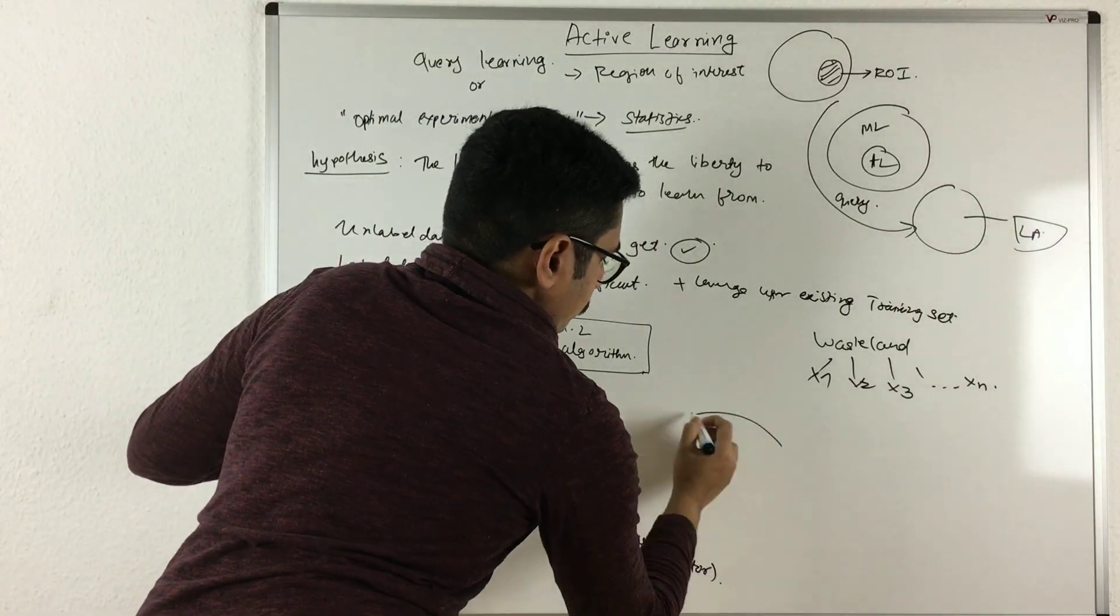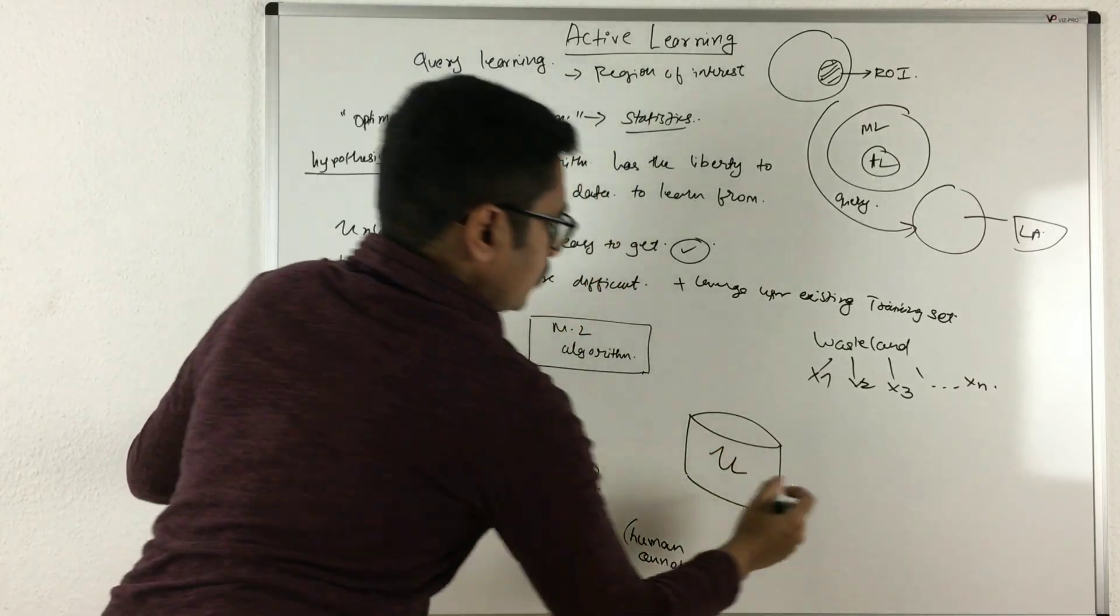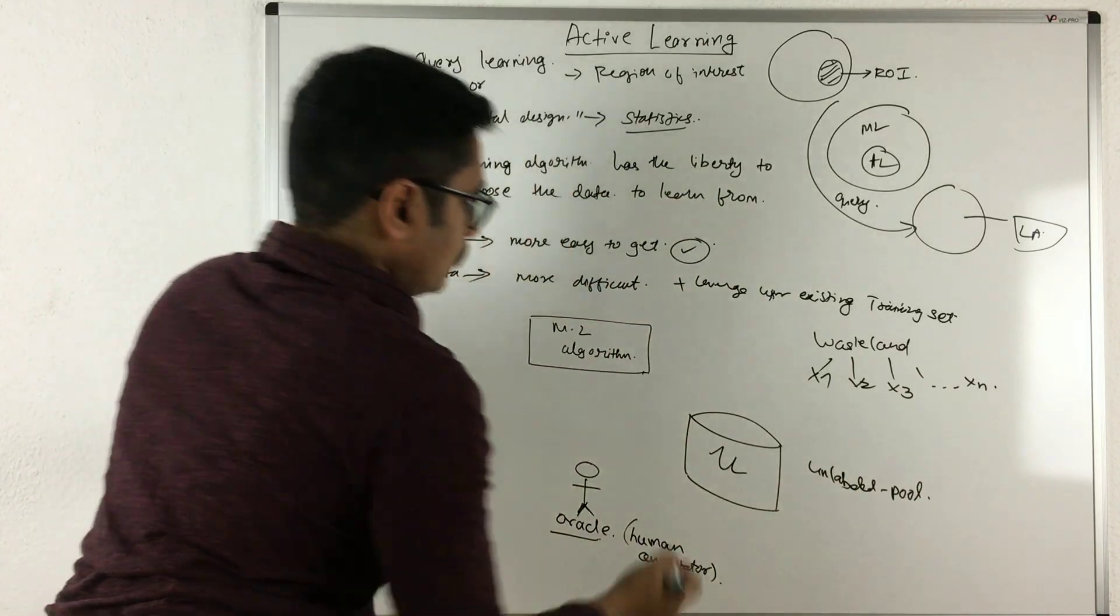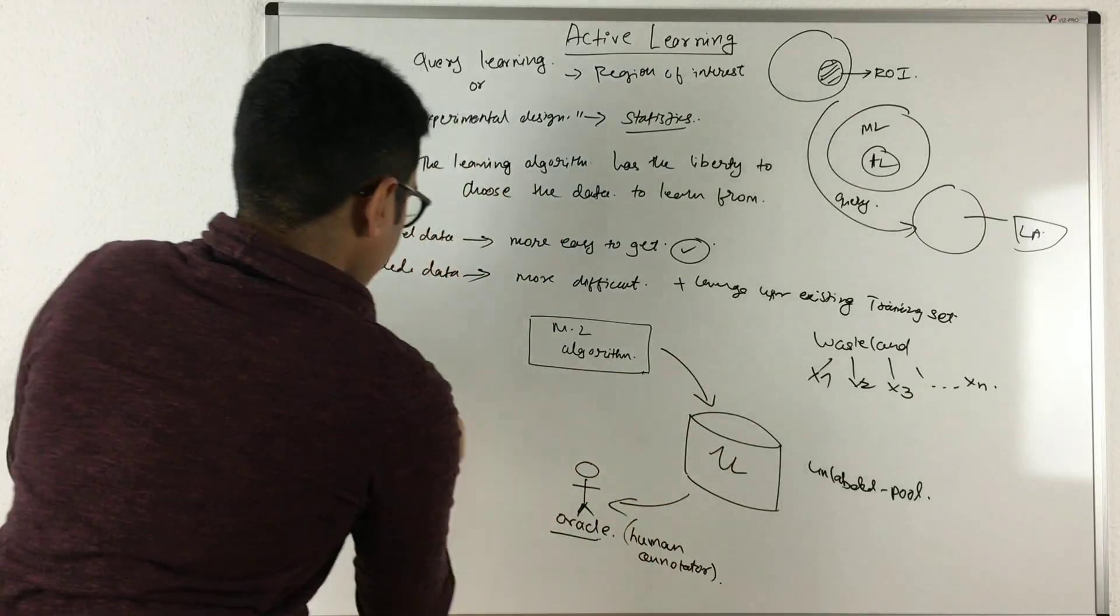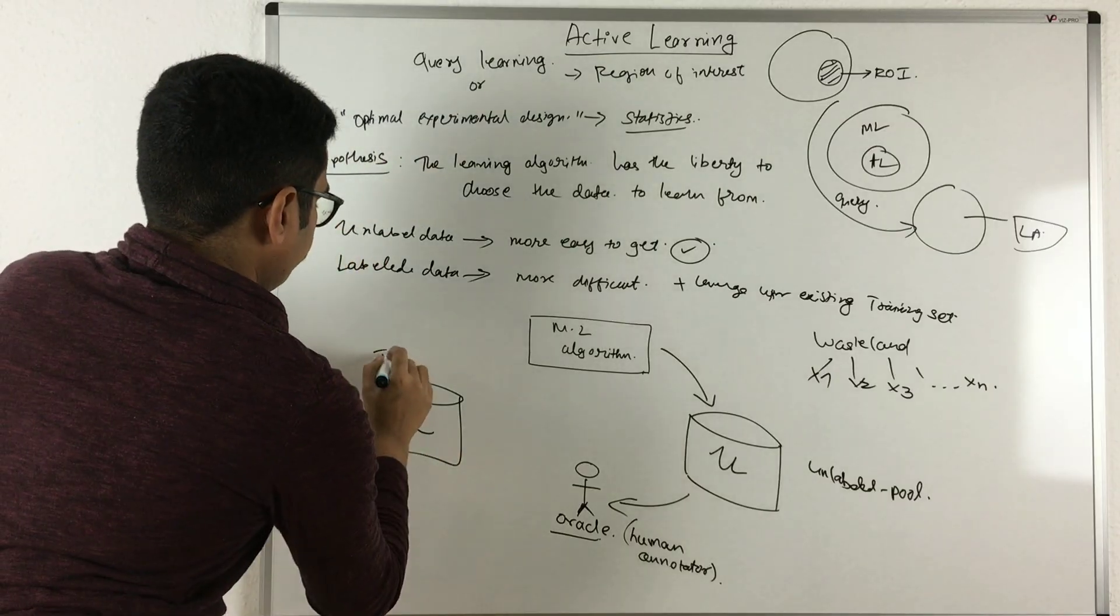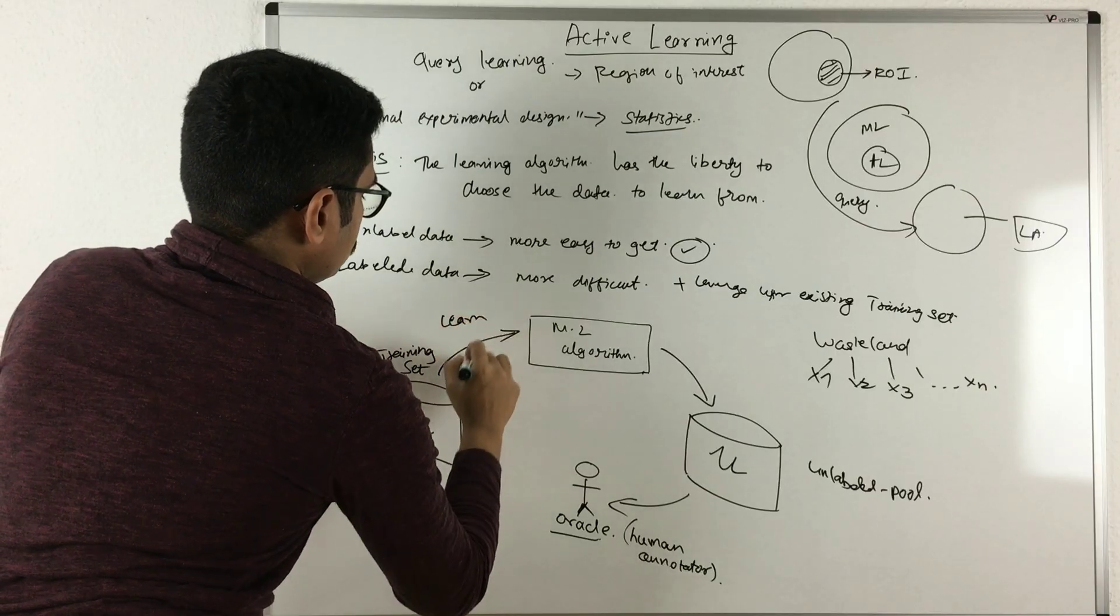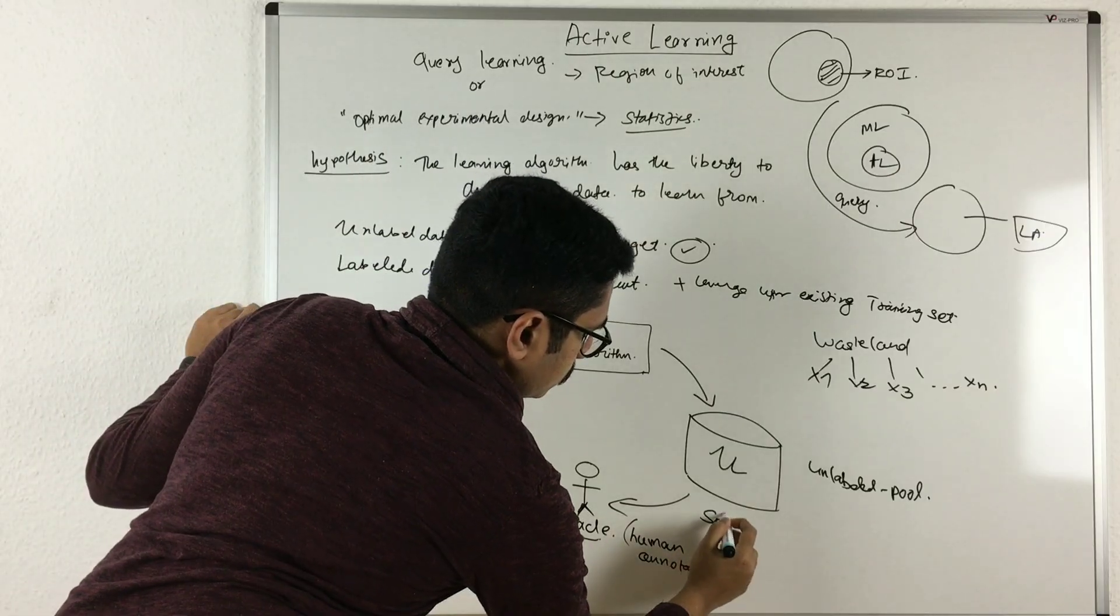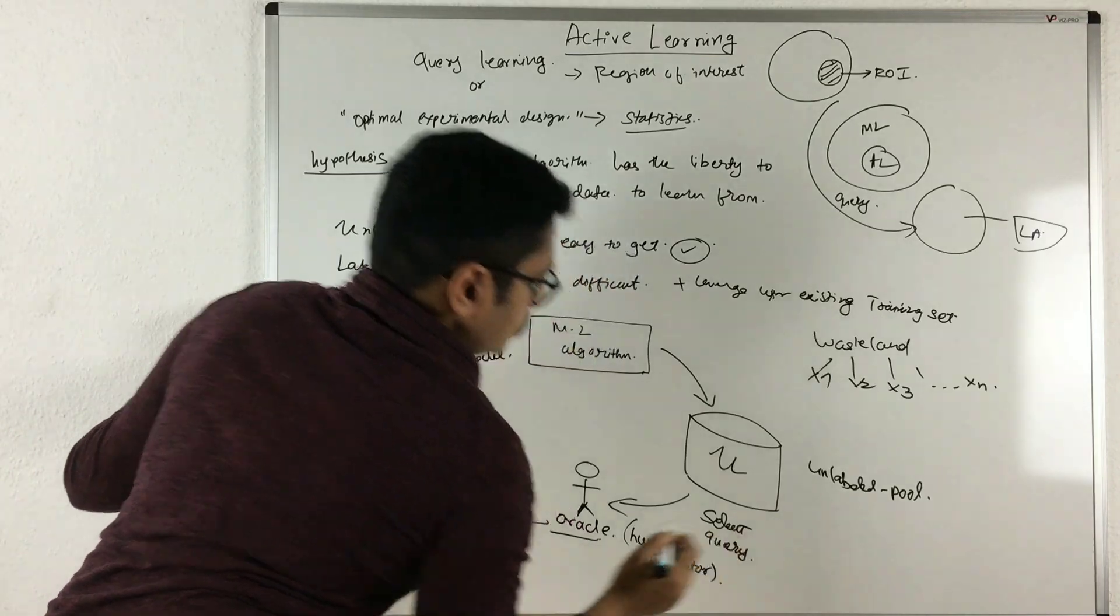Now what it does is he'll pick up the data from the unlabeled pool, so he'll basically query this, and he'll just update it to his labeled instances. So this is the training set. Here you learn model, and here you select certain instances based on query.